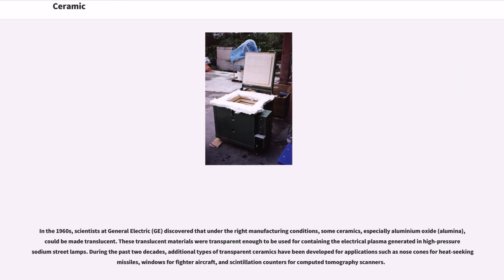In the 1960s, scientists at General Electric (GE) discovered that under the right manufacturing conditions, some ceramics, especially aluminum oxide (alumina), could be made translucent. These translucent materials were transparent enough to be used for containing the electrical plasma generated in high-pressure sodium street lamps.